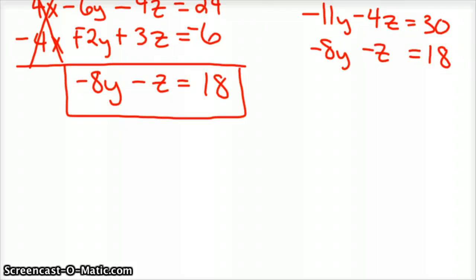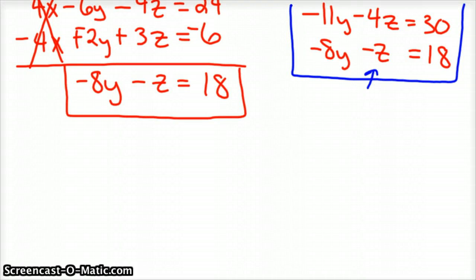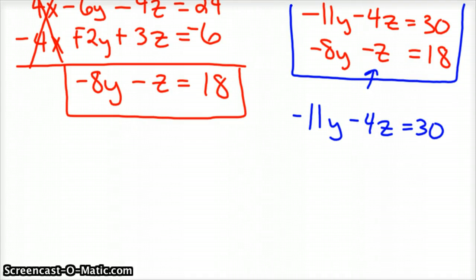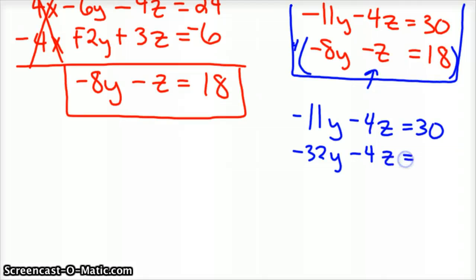So the next step here is to use these two equations and eliminate another variable. I'm going to eliminate my z, because that looks like the easiest. So I'm going to leave the top equation alone: negative eleven y minus four z equals thirty. And my bottom equation, I'm going to multiply by a four. So you'd have negative thirty-two y minus four z equals positive seventy-two.